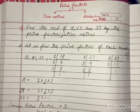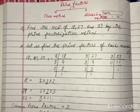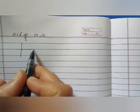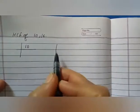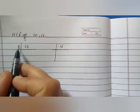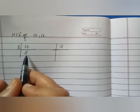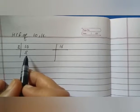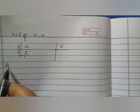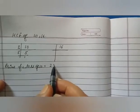So students, in this way we can find the HCF using the division method. Now let us take one more example: find the HCF of 10 and 16. First, we find the prime factors of 10. We start with the table of 2 — 2 fives are 10. Since 5 is a prime number, we stop. So the prime factors of 10 are 2 and 5.